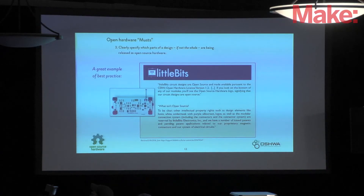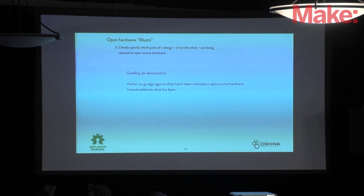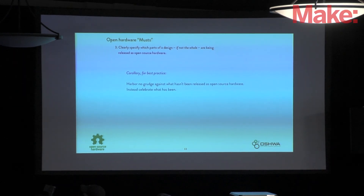A great example of must number three — specifying which parts of a design are open source — is given by littleBits. They have a page on their site saying their circuit boards carry the open source hardware logo and those designs are available for download, but their logos, trademarks, and connectors are proprietary. This brings up another point: it's not helpful to the community to hold a grudge against the parts of a design that aren't released. We should celebrate what parts are released as open source hardware, because that builds the community.